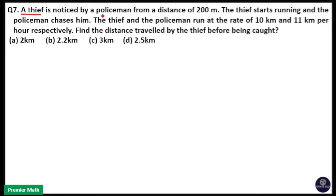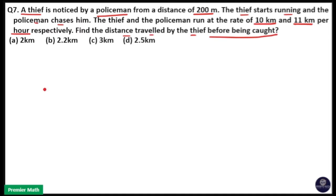A thief is noticed by a policeman from a distance of 200 meters. The thief starts running and the policeman chases him. The thief and policeman run at the rate of 10 km and 11 km per hour respectively. Find the distance travelled by the thief before being caught.